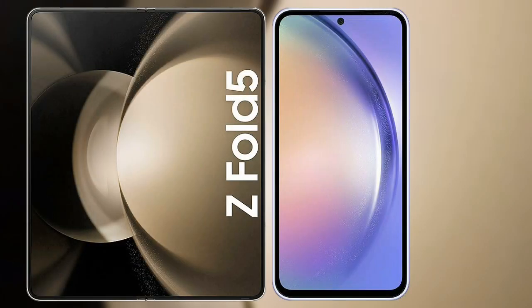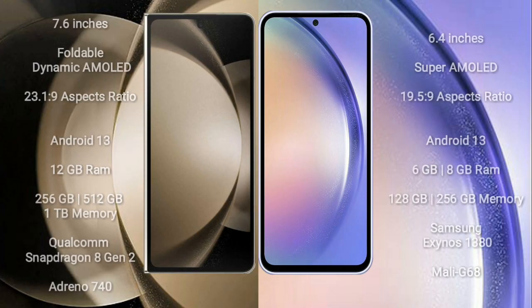I will compare the new Samsung Galaxy Z Fold 5 with Samsung Galaxy A54. The Z Fold 5 comes with a 7.6-inch foldable dynamic AMOLED display and aspect ratio 23.1:9. The Samsung Galaxy A54 comes with a 6.4-inch Super AMOLED display and aspect ratio 19.5:9.